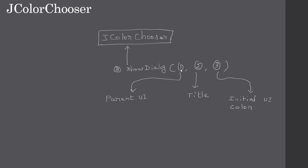The showDialog method accepts three parameters. The first one is the parent UI - if you are accessing the JColorChooser from a frame window, the frame window will be the parent UI; if it is a dialog, the dialog will be the parent. The second parameter is a title string for the JColorChooser. The third parameter is the initial color for the dialog - when the dialog is displayed it automatically pre-selects that color. So if we pass blue, blue will be pre-selected, and if the user closes the dialog without changing anything, it will return that color.